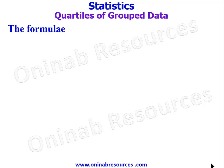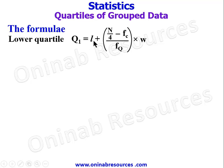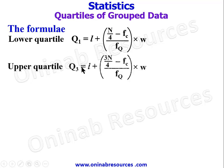Now we'll look at the formulae for upper quartile, lower quartile, interquartile range, and semi-interquartile range. For lower quartile we call it Q1, which is equal to L plus (n over 4 minus fc) all over fq, then multiply by w. For upper quartile we call it Q3, equal to L plus (3n over 4 minus fc) over fq, multiply by w. We need to understand what all these parameters in the formulae stand for.